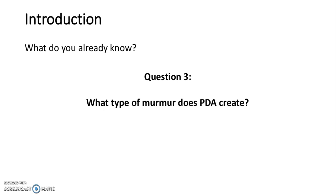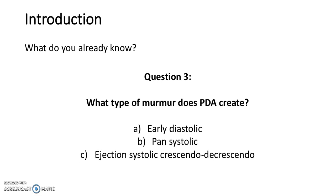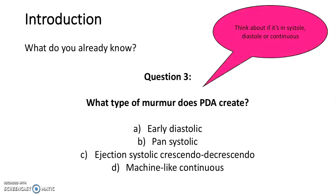Question 3: What type of murmur does PDA create? Is it A. Early diastolic. B. Pansystolic. C. Ejection systolic crescendo decrescendo. Or D. Machine-like continuous. Think about whether it's in systole, diastole, or continuous. The answer is D, machine-like continuous. The murmur created by PDA is a machine-like continuous murmur.